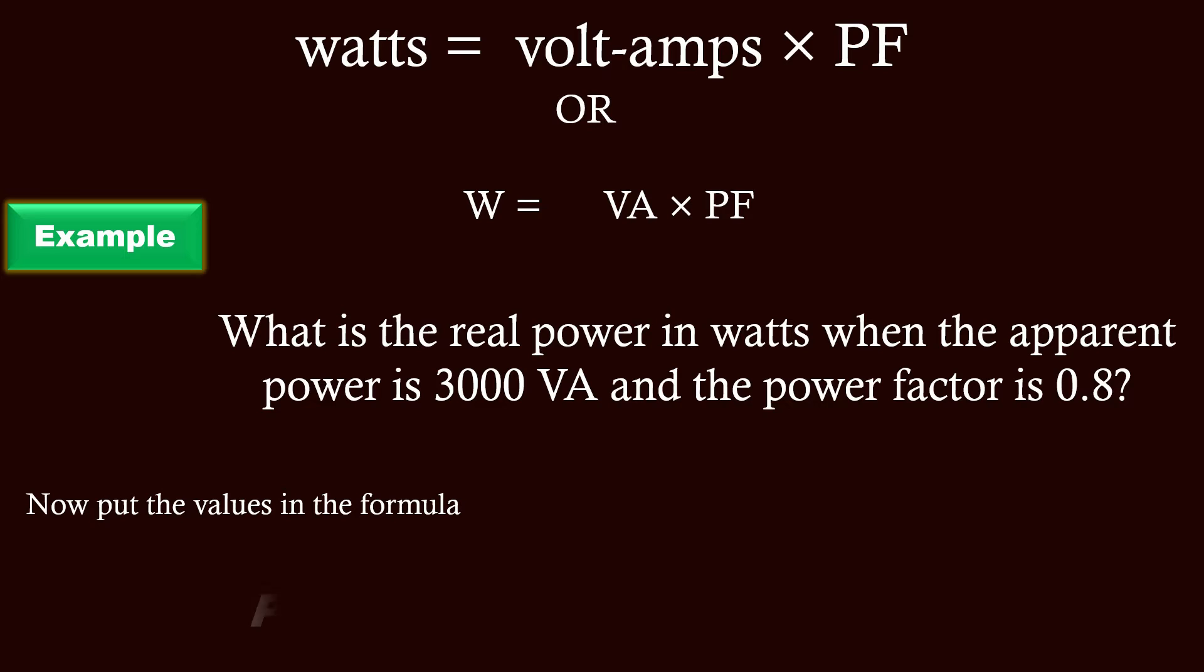Now put the values in the formula. Real power is equal to 3000 VA—VA means volt-ampere—multiplied by 0.8. The answer becomes 2400 watts.